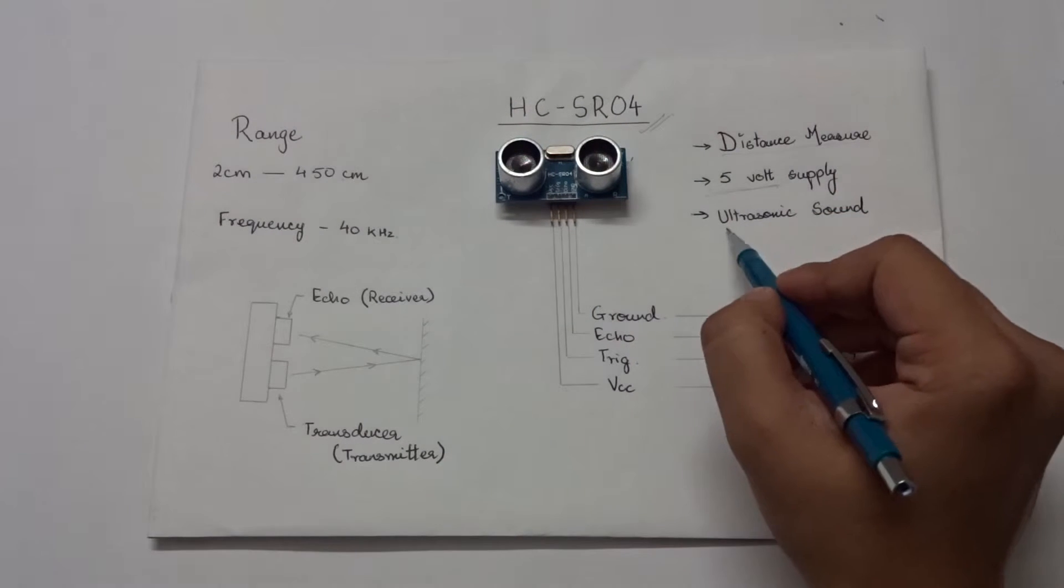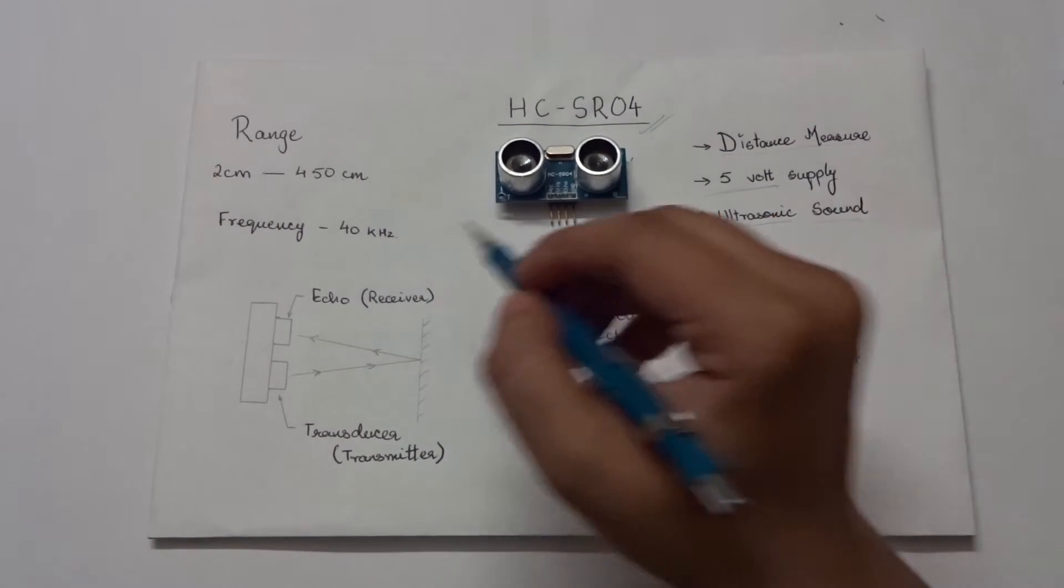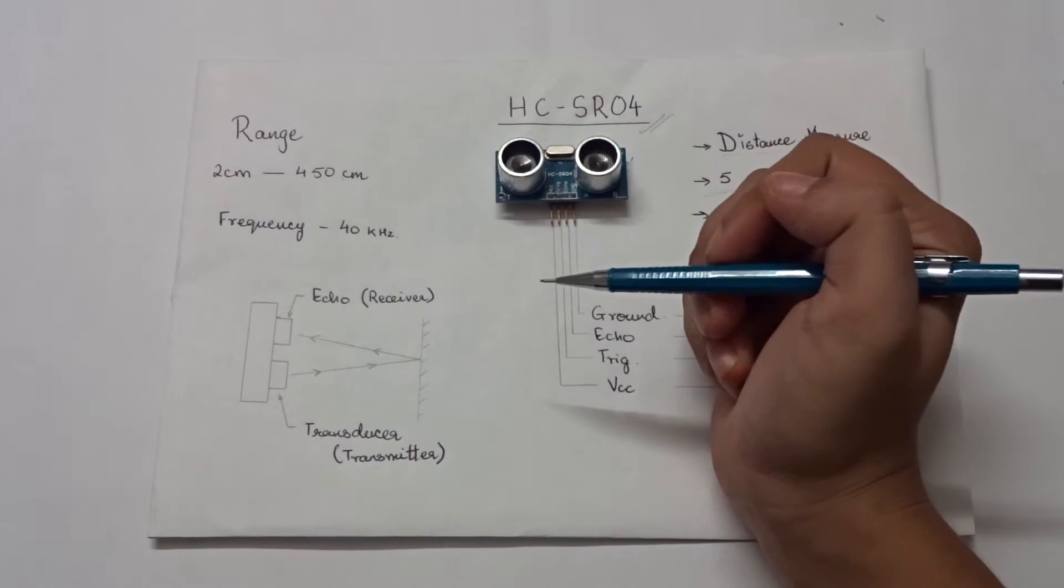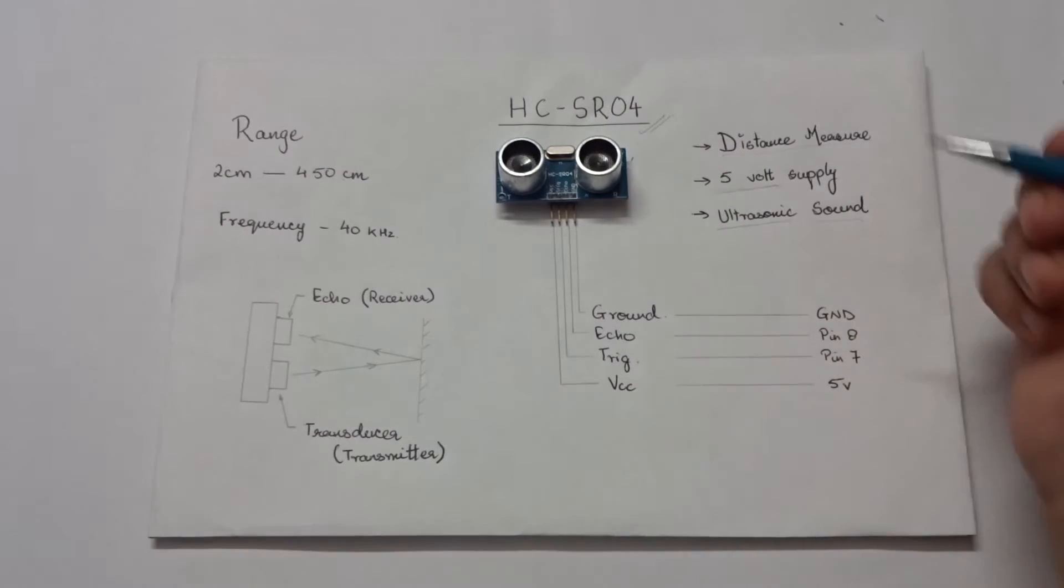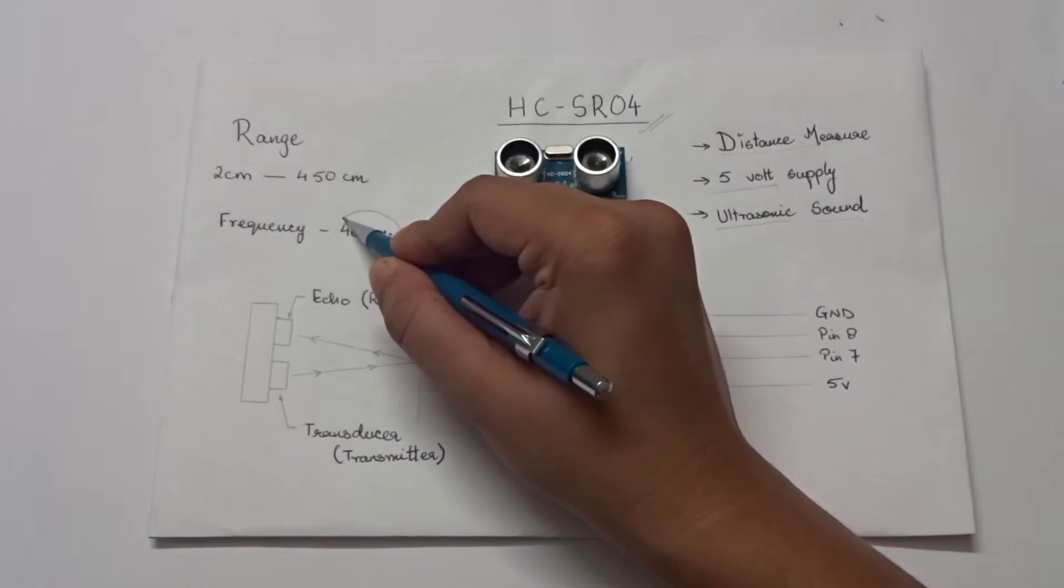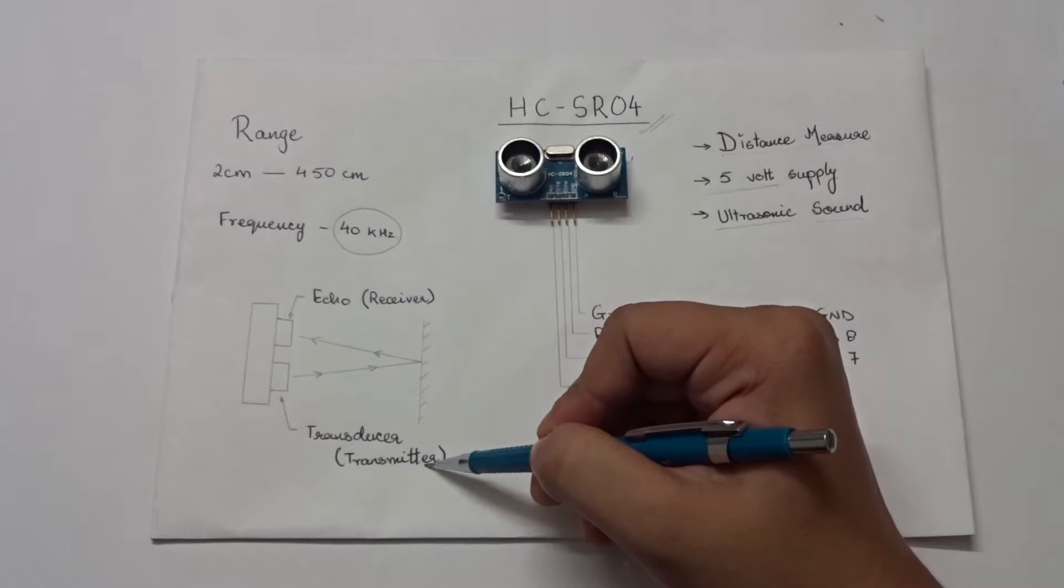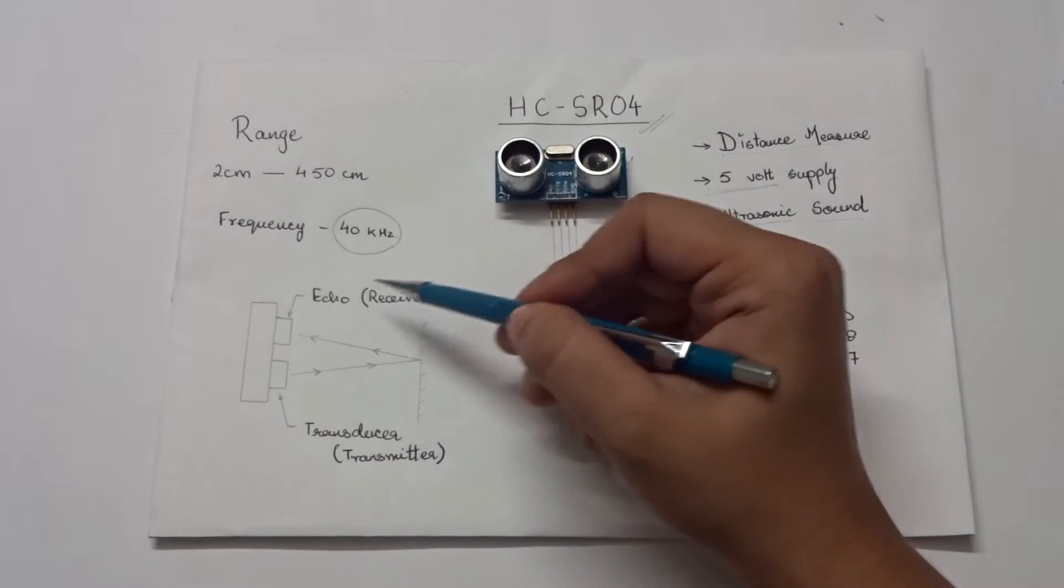This sensor uses ultrasonic sound to measure distance just like bats and dolphins do. Ultrasonic sound has such a high pitch that humans cannot hear it. This particular sensor sends out an ultrasonic sound that has a frequency of about 40kHz. The sensor has two main parts, a transducer that creates an ultrasonic sound and another listens to its echo.